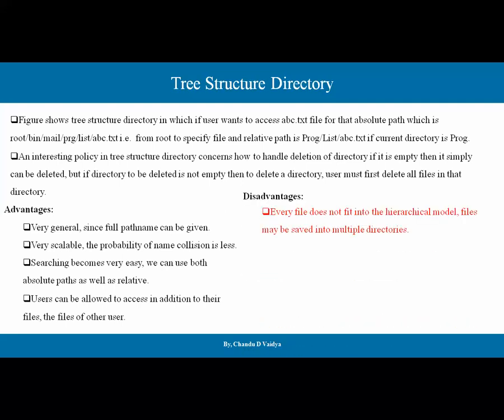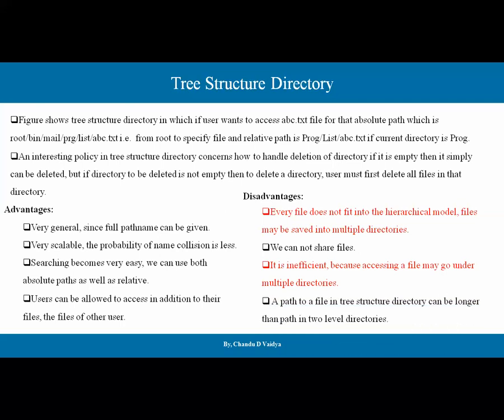There are some disadvantages. Every file does not fit into the hierarchical model. Files may be saved into multiple directories. We cannot share files directly with more than one user. Also, the path of a file in a tree structure can be longer than the path in a two-level directory.